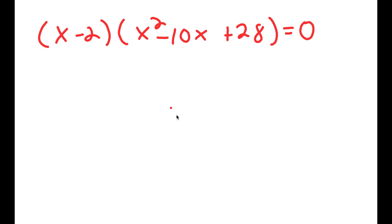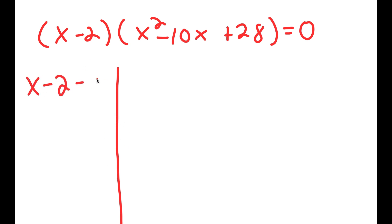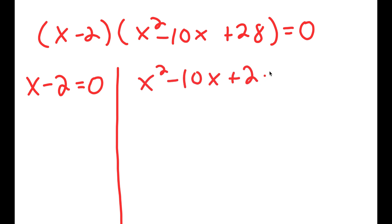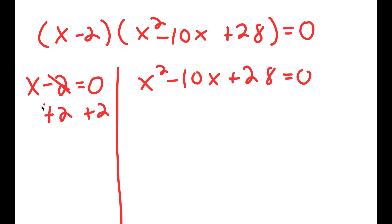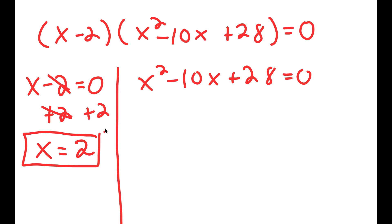From here this gives me two equations: x minus 2 equals 0 and x squared minus 10x plus 28 equals 0. For x minus 2 equals 0, I add 2 on both sides — these cancel out — and I get x equals positive 2. So this is one solution.